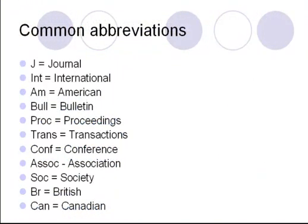Sometimes it's helpful to know some common abbreviations used in abbreviated journal titles. For example, J stands for Journal, INT for International, AM for American, and so on. These are some of the most common abbreviations you will find. When you do your catalog search for the title of the journal, just write out the entire word.